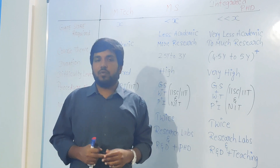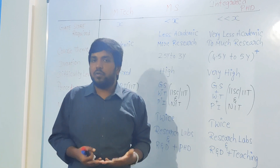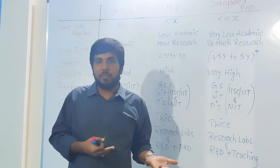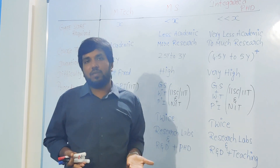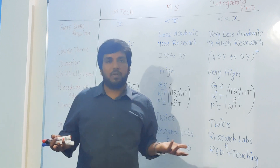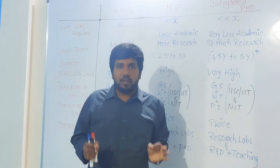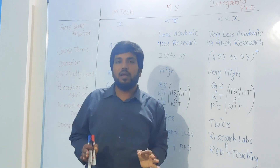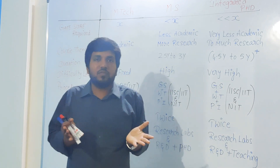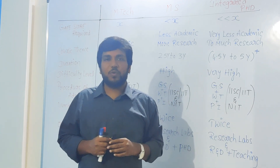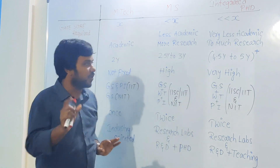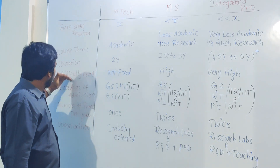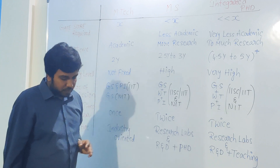Since it is a research-oriented course, the duration is not fixed — it is a dynamic parameter. It depends on your professor. If you get results immediately you can convince the professor after publishing some papers. If you are not getting results, the duration will increase. This means research-oriented courses are largely in the hands of the professor, so you should select a good professor.